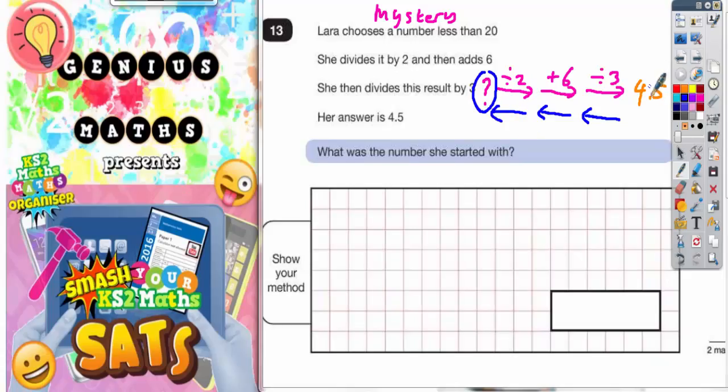So if we start with 4.5 we need to divide that by 3. So we can use the space down here to do some working out. So 4.5 divided by 3. But hang on a minute, that's not the opposite. You've got to do the opposite. So the opposite of divided by 3 is times 3.